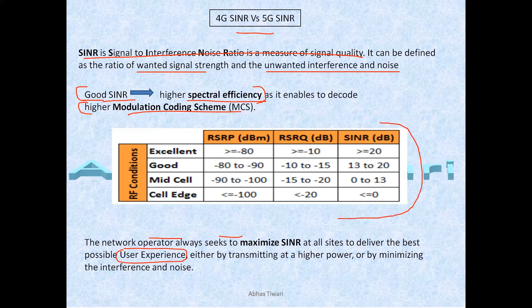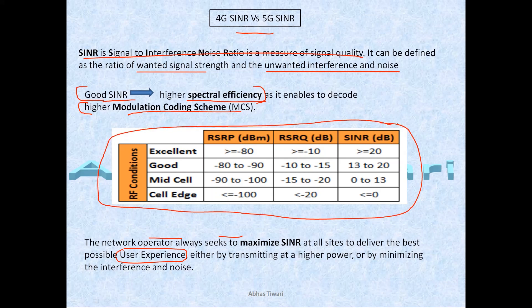These are general SINR or radio condition ranges considered as good, bad, and excellent. Generally anything greater than zero is considered good. Some operators have their own thresholds — for example, some keep greater than 10 as better and less than 10 as poor SINR. It's all based on operator choices. So SINR is your signal-to-noise ratio: wanted signal divided by unwanted signal plus noise.